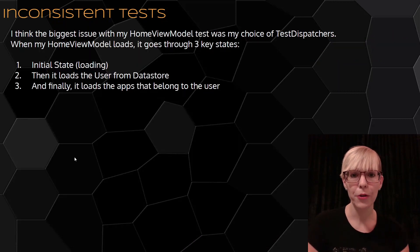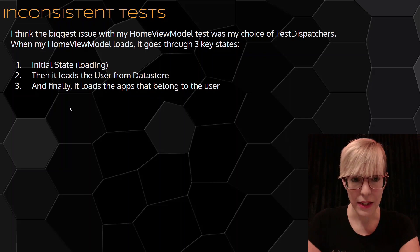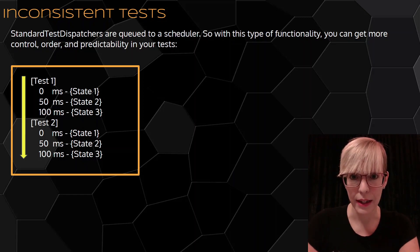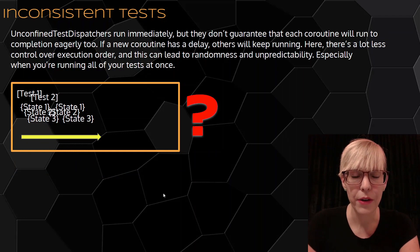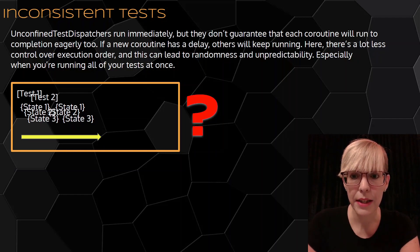I think the biggest issue with my home view model test was my choice of test dispatchers. When my home view model loads, it goes through three key states: the initial state, then it loads the user from the data store, and finally it loads the apps that belong to the user. Standard test dispatchers are queued to a scheduler, so with this type of functionality you can get more control, order, and predictability in your tests — you have a more ordered flow. Unconfined test dispatchers run immediately, but they don't guarantee that each coroutine will run to completion eagerly. If a new coroutine has a delay, others will keep running — there's a lot less control over execution order, and this can lead to randomness and unpredictability, especially when running all of your tests together.